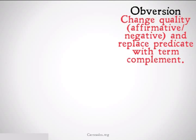Obversion is changing the quality — that's affirmative or negative — of a statement, and replacing the predicate with the term complement. Quality, remember, would be like changing an 'all' to a 'no,' or a 'some' to a 'some are not.' And term complement is just the opposite of a term, so S would turn to non-S, horse would turn to non-horse, and so on and so forth.